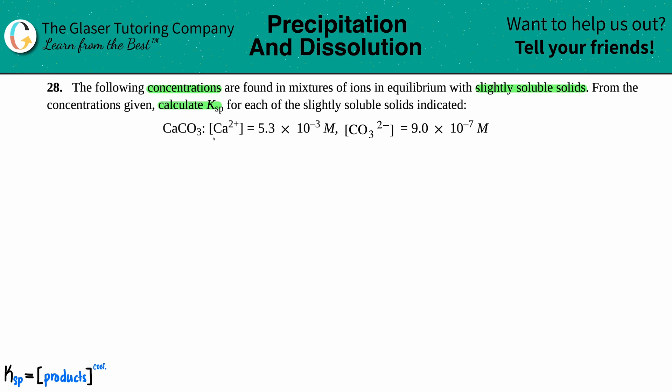In calcium carbonate, they told us that the Ca²⁺ molarity was 5.3×10⁻³ M, and the carbonate ion concentration is 9.0×10⁻⁷ M.